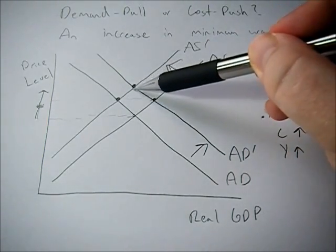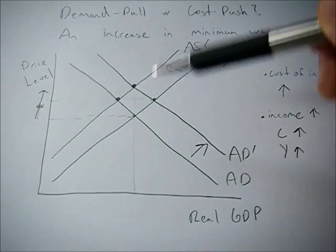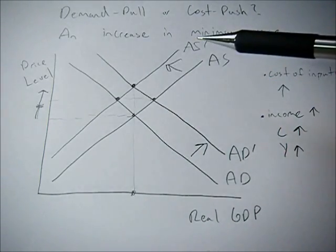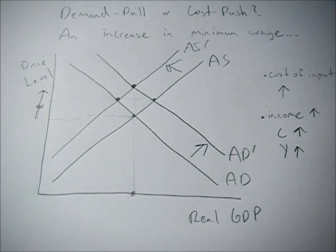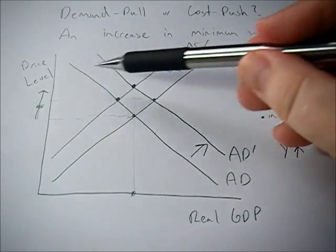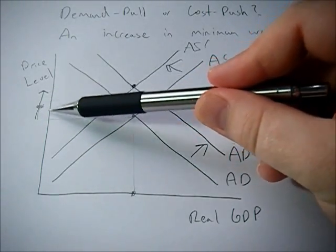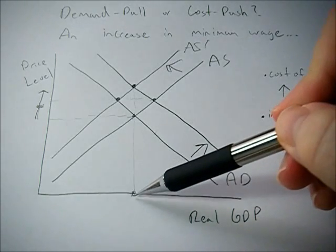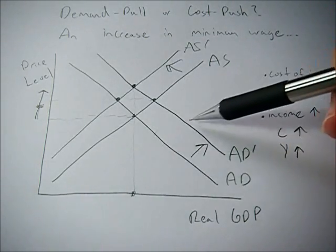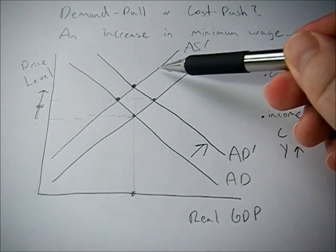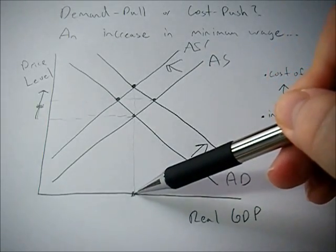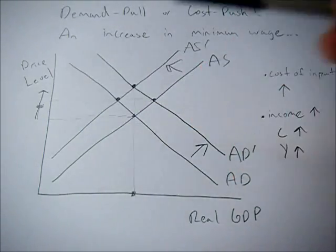In this example, I shifted the curves the same amount, so we actually end up at the same real GDP level as our initial equilibrium. So if we were to raise minimum wage and both curves shift the same amount, all we see happen in the economy is an increase in price level — inflation. Nothing happens to real GDP, because people use the income to buy more stuff, but firms are willing to supply less of it because costs went up. So nothing happens to GDP, just the price level goes up.